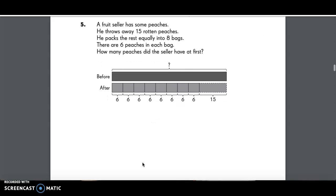Number five, a fruit seller has some peaches. He throws away 15 rotten peaches. He packs the rest equally into eight bags. There are six peaches in each bag. How many peaches did he have at first?